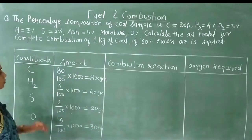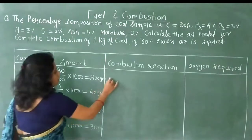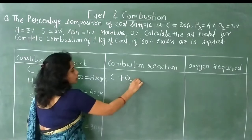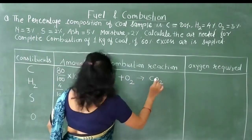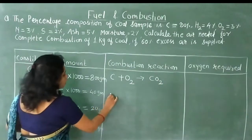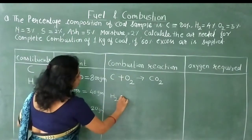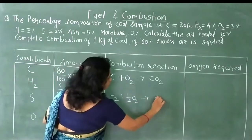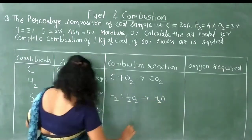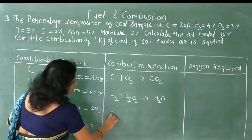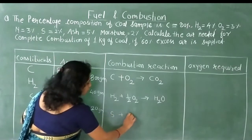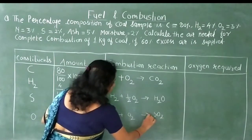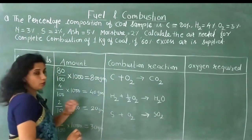Now we write the combustion reactions for all constituents. For Carbon: complete combustion gives Carbon Dioxide (CO₂). For Hydrogen: the combustion reaction gives water (H₂O) — these are standard reactions that don't change. For Sulfur: Sulfur reacts with one mole of Oxygen and forms Sulfur Dioxide (SO₂). These are the combustion reactions.